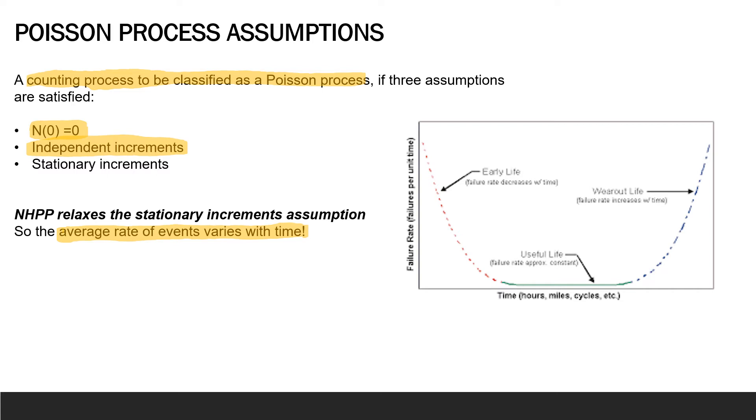Non-homogeneous Poisson process based models allow the modeling to capture features like increasing failures with time wear out. So this portion of the bathtub curve. Or we could be looking at the early stage of the bathtub curve where our system is not failing at a constant rate. Instead, we see perhaps system improvement.